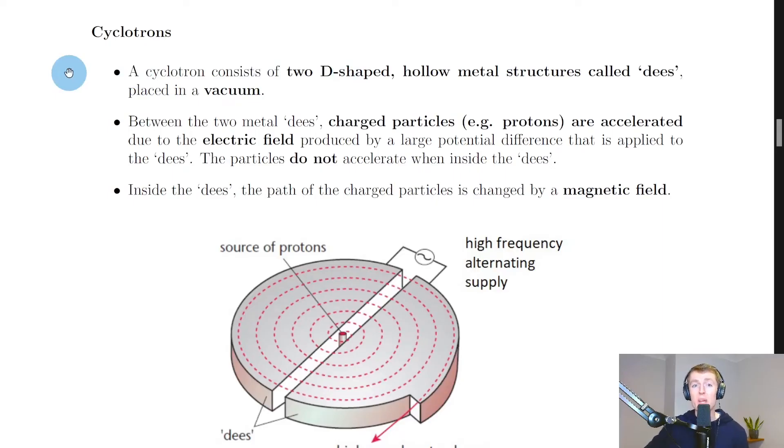Now a cyclotron clearly has a different shape to a linear accelerator which we saw in the previous theory video, but they work in a very similar way. A cyclotron consists of two d-shaped hollow metal structures called dees placed in a vacuum.